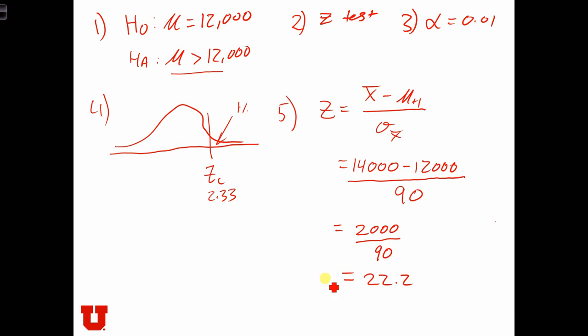So the z-score—that's a really high z-score. The z-score is way out over here. The test statistic is way out over here, well into the zone of rejection.